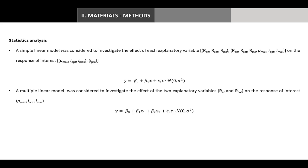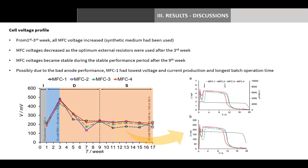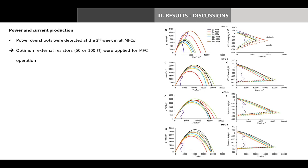Here, Y is the response and X is the explanatory variable. After the inoculation phase, synthetic medium was used and measurements were started. From the first to third week, all MFC voltages increased. MFC voltages decreased when optimum external resistors were applied after the third week, and MFC voltages became stable during the stable performance period after the ninth week.